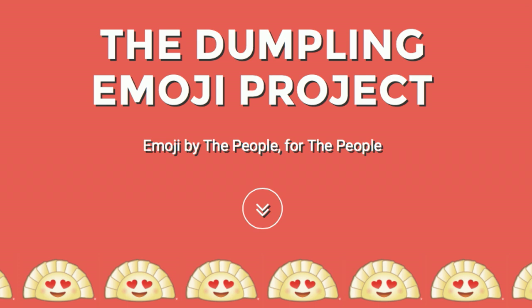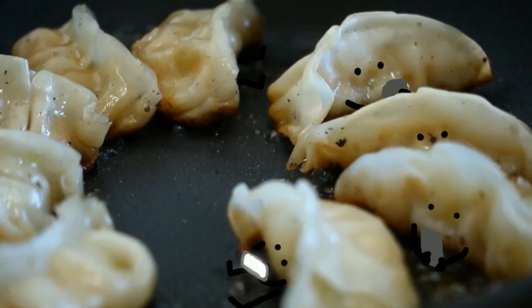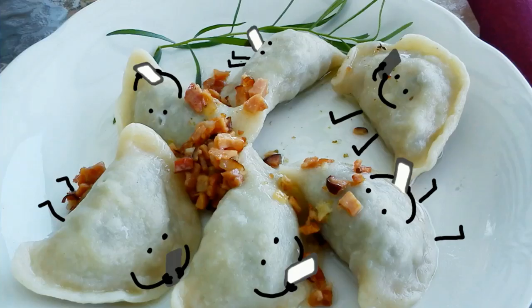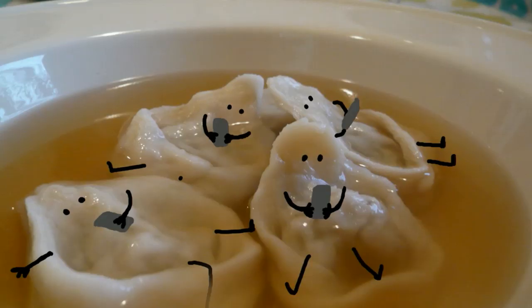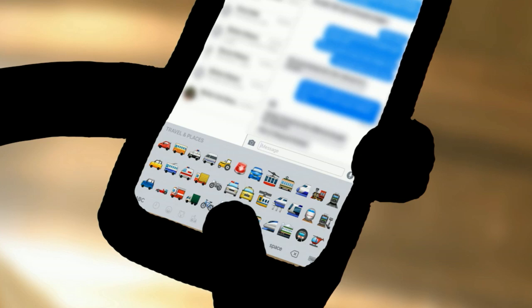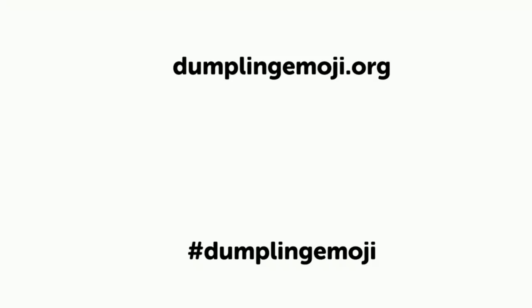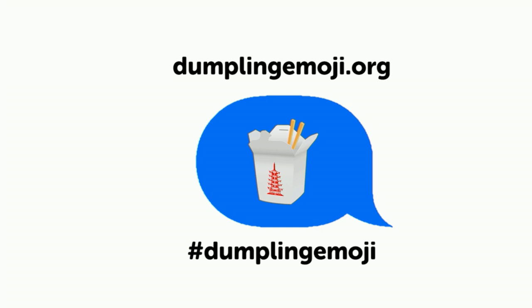We started this campaign to get the dumpling emoji, made a Kickstarter video. The video said: dumplings are one of the most universal cross-cultural foods in the world — Georgia has khinkali, Japan has gyoza, Korea has mandu, Italy has ravioli, Poland has pierogi, Russia has pelmeni, Argentina has empanadas, Jewish people have kreplach, China has potstickers, Nepal and Tibet have momos — yet somehow despite their popularity, there is no dumpling emoji in the standard set.